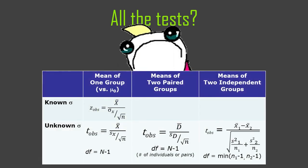There are actually a bunch of little formulas, but you don't have to memorize all of these yet — we'll get into them. You already know some of them. You now know the means of two independent groups. You'll learn the remaining formulas in a later lecture.